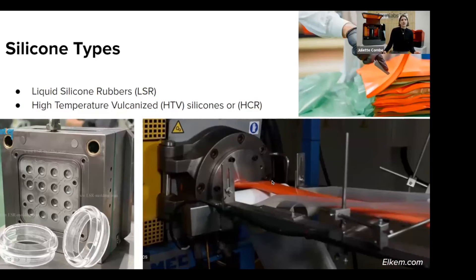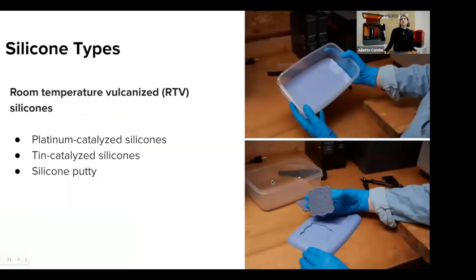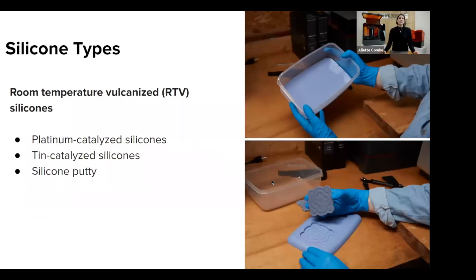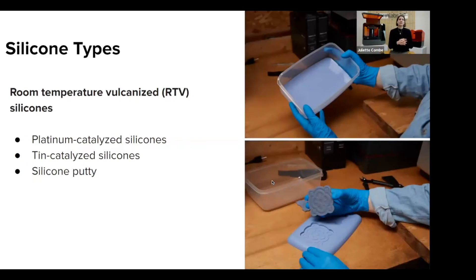And a third type of silicone elastomer — you can see it on the right — is room temperature vulcanized silicone, RTV. This is what we're going to focus on today. These are silicones that are cured at room temperature, so there is no high heat involved. They are much easier to process compared to the previous two silicone types, and still have great mechanical and thermal properties. They are very popular in various industries to make gaskets, medical devices, and overmolded devices, and they are processed by injection molding or compression molding. They usually require longer cycle times and more manual labor, so they are better suited for small volume production.